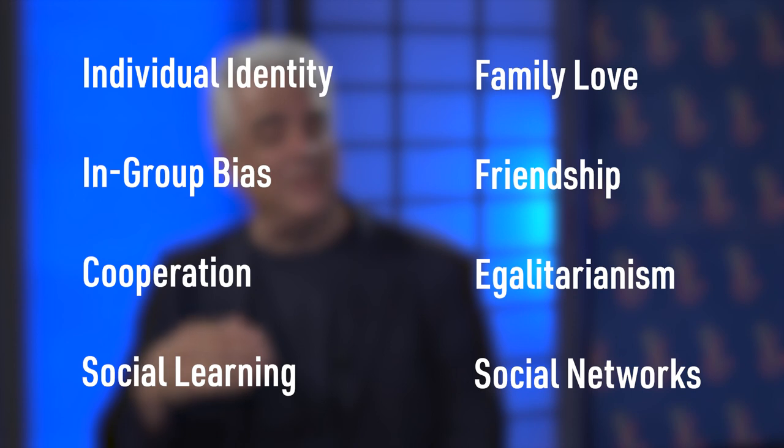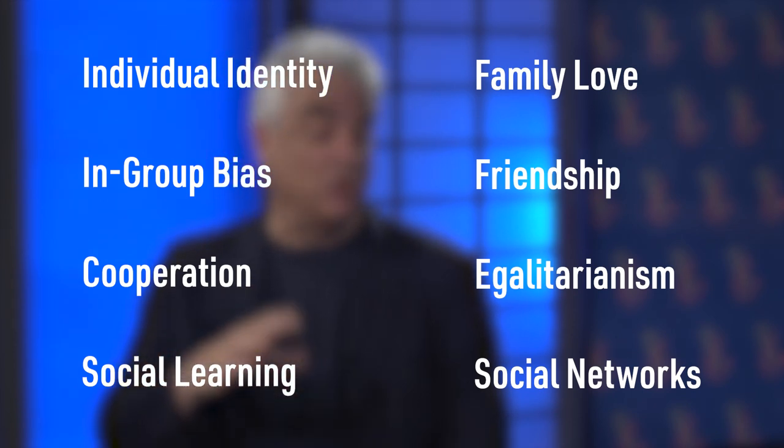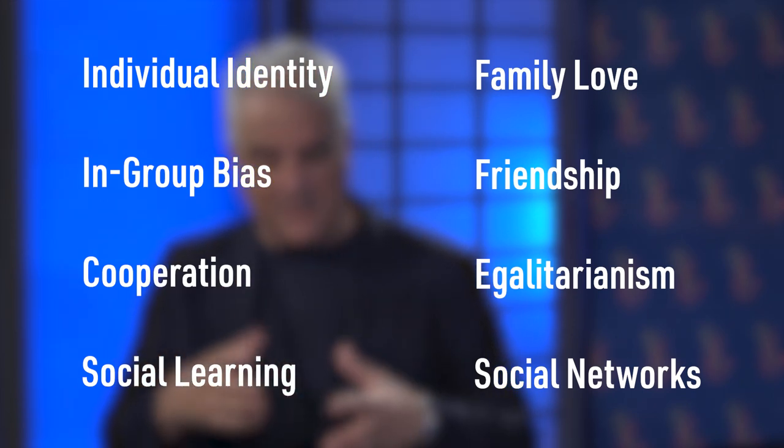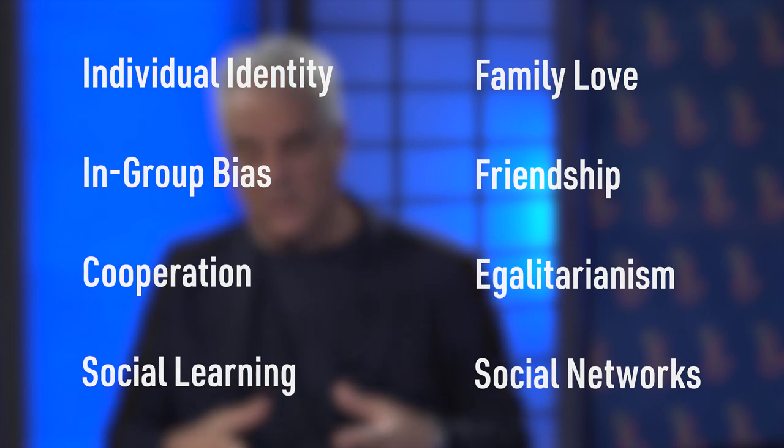It's shaped how we live together. It's endowed us with all of these properties. There are eight key properties that I call the social suite. They include love and friendship and cooperation and teaching and social networks. These are qualities that are encoded in our genes, that we are impelled to manifest and express between people.